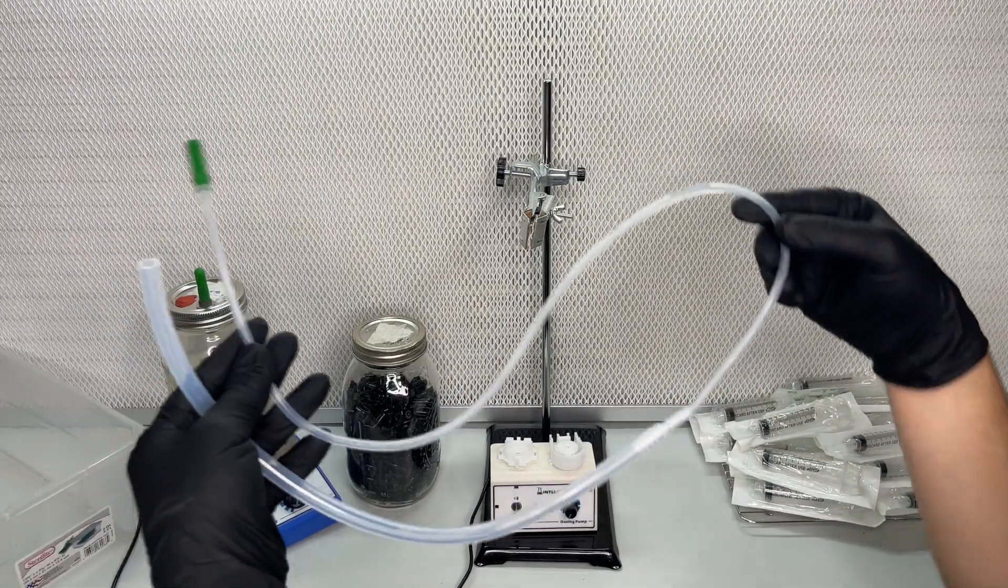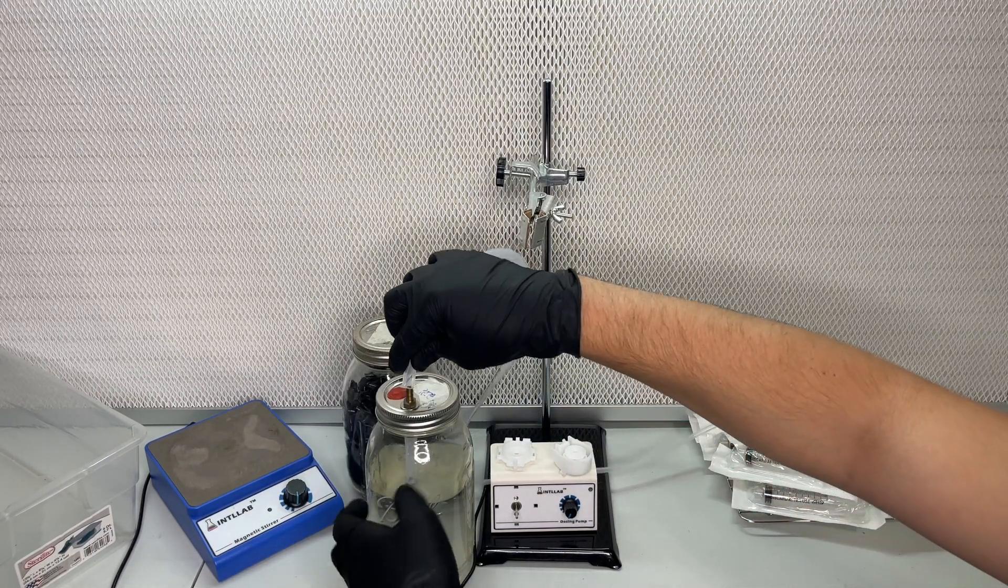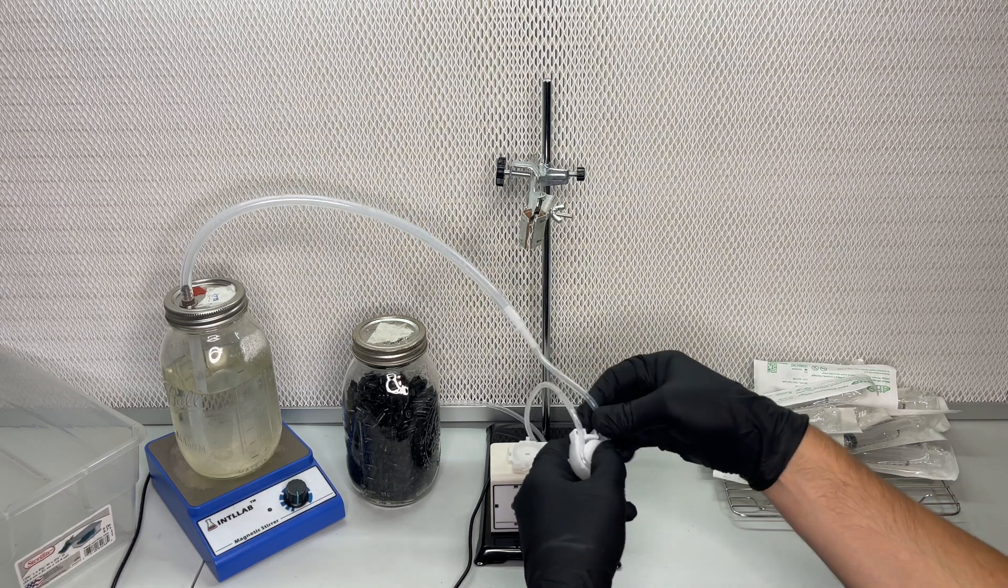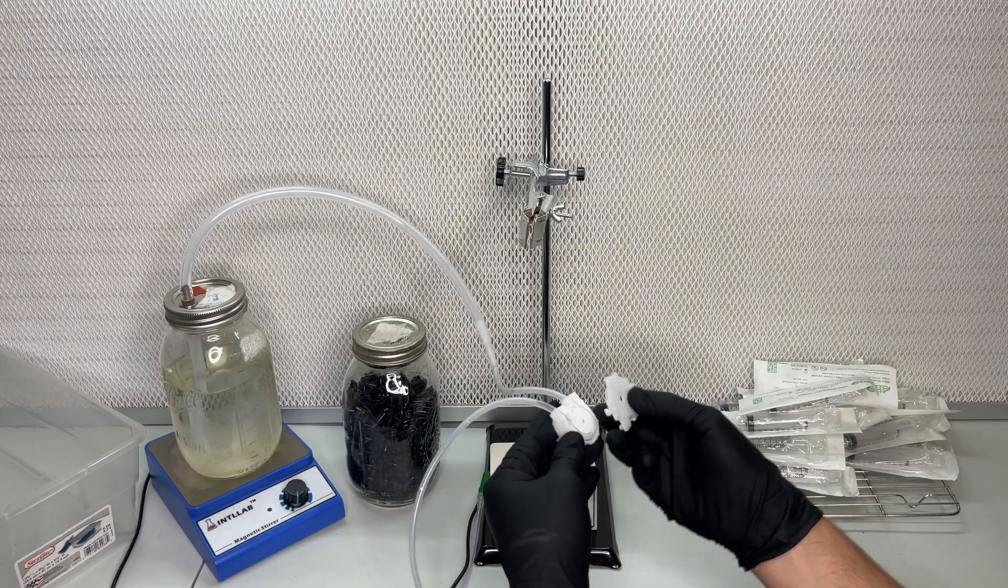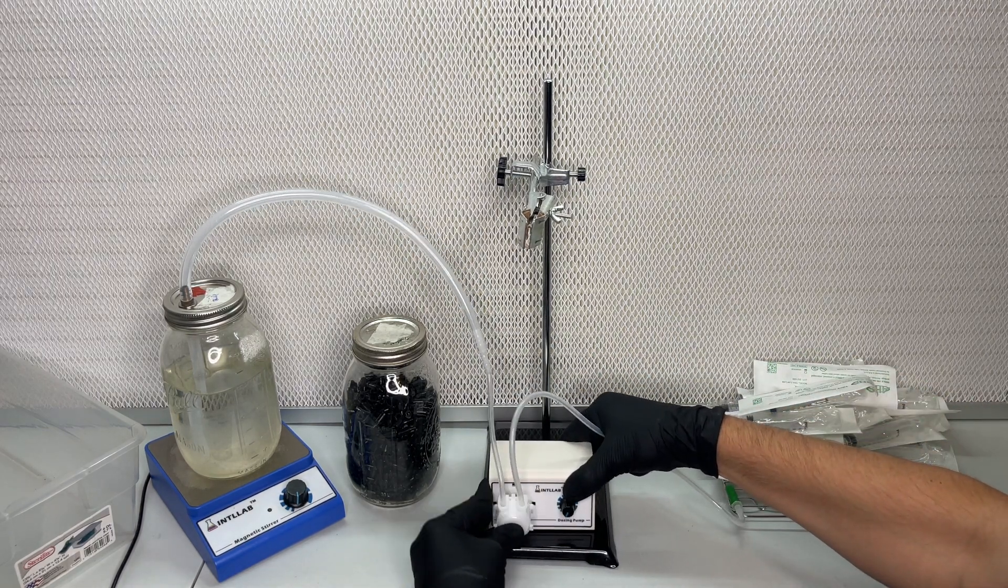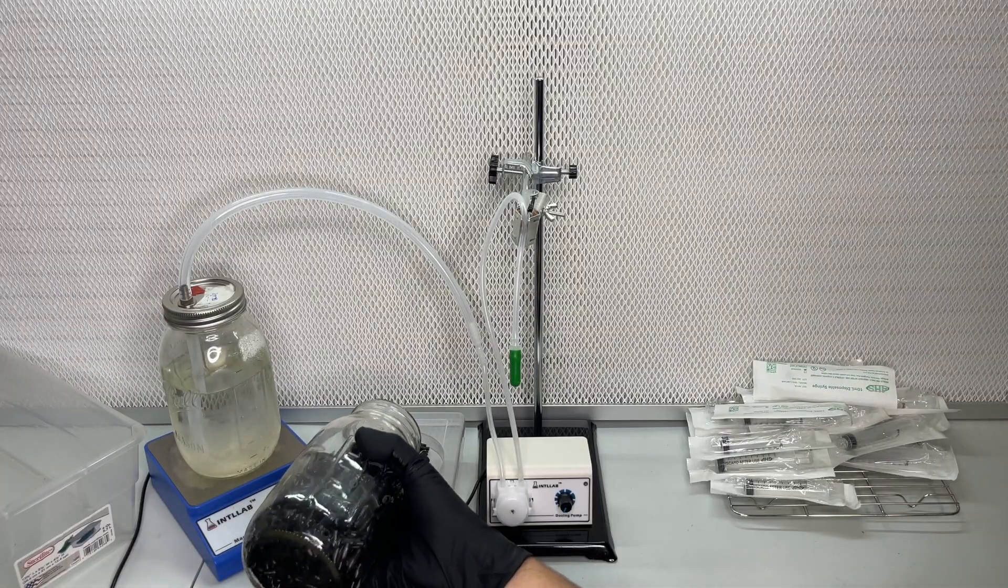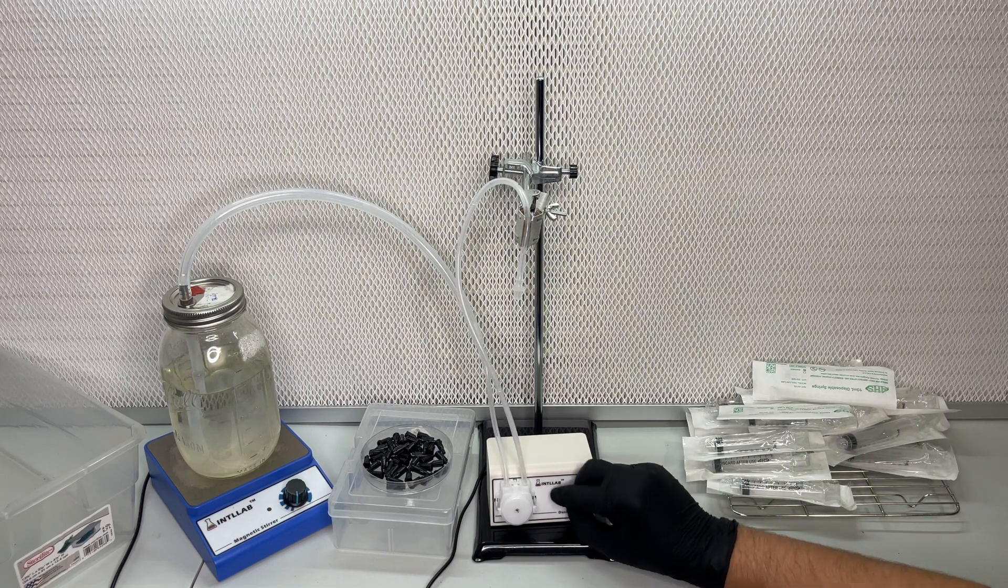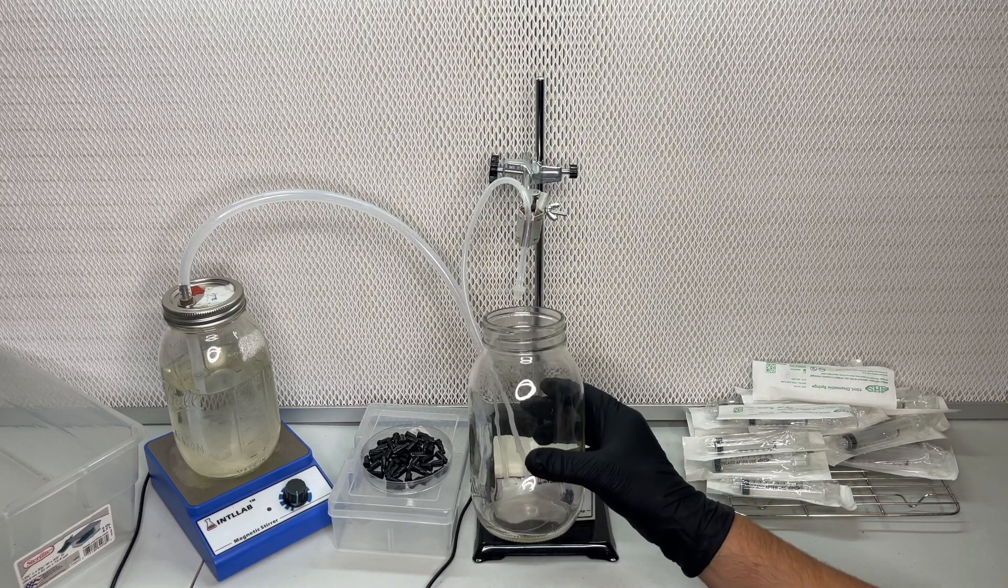I sterilize all the tubing in a pressure cooker and then I attach it from the liquid culture jar to the peristaltic pump. I also sterilized the syringe caps in the pressure cooker. On the very end of the tube I attached a luer lock one and one eighth inch barbed adapter to attach the syringe to.